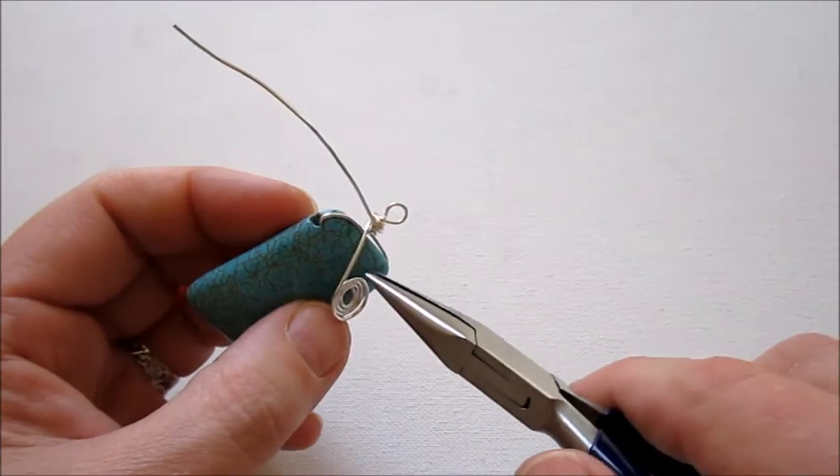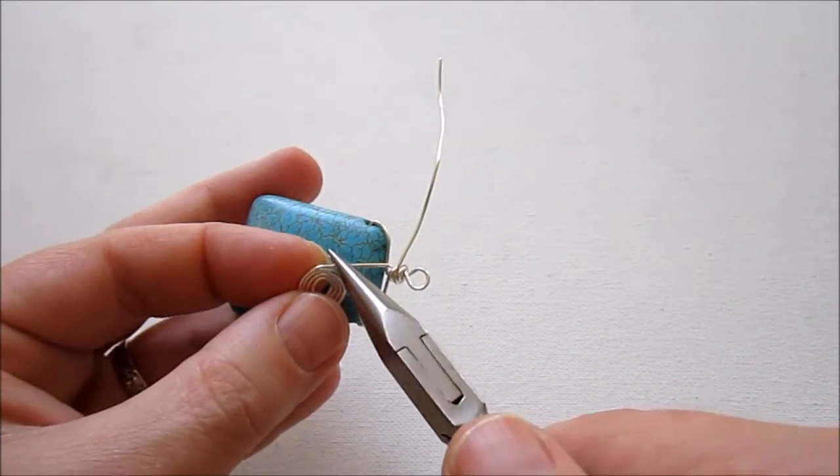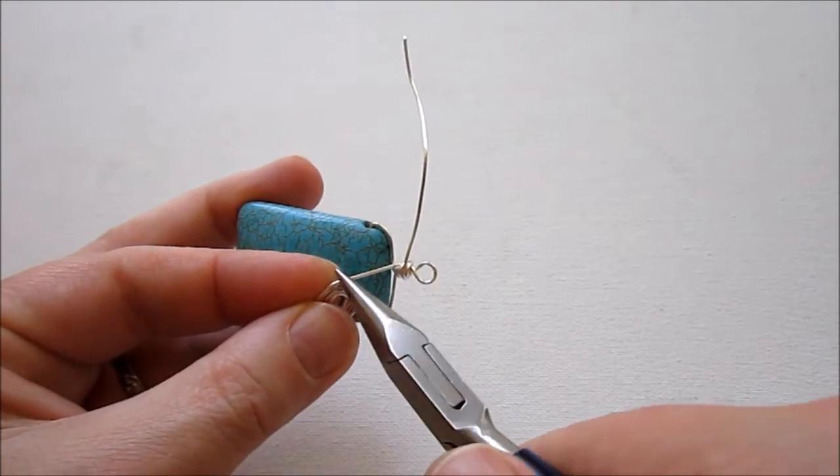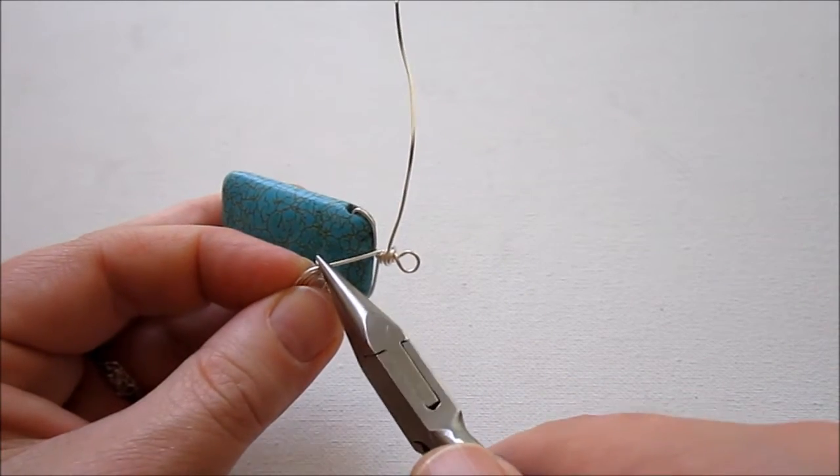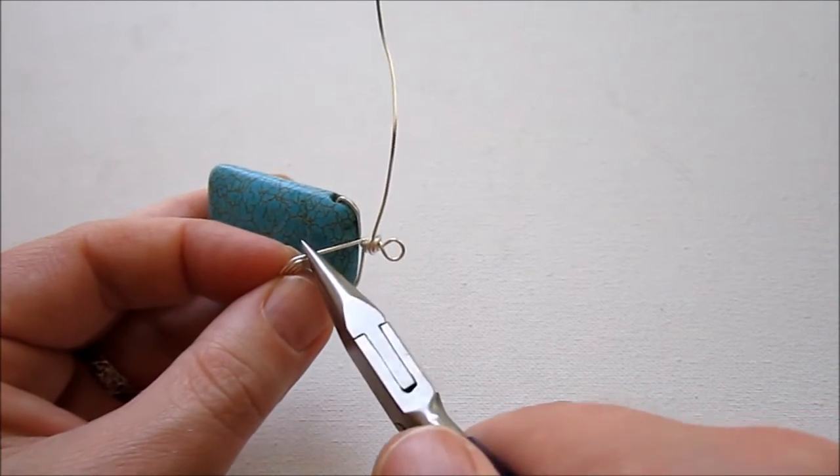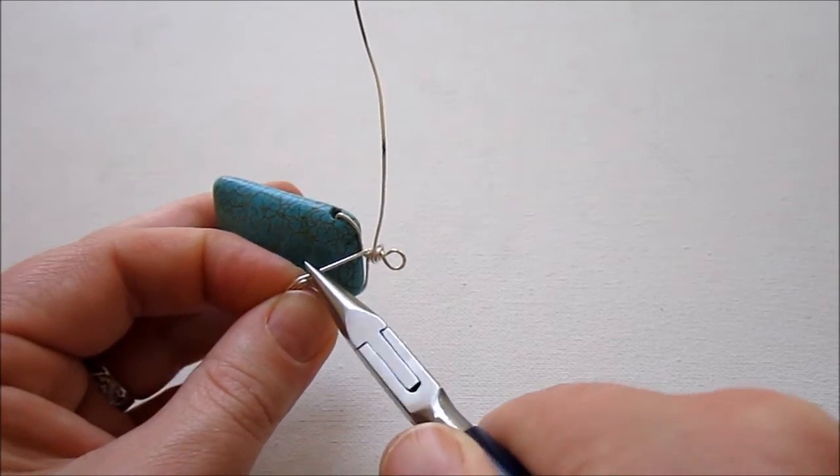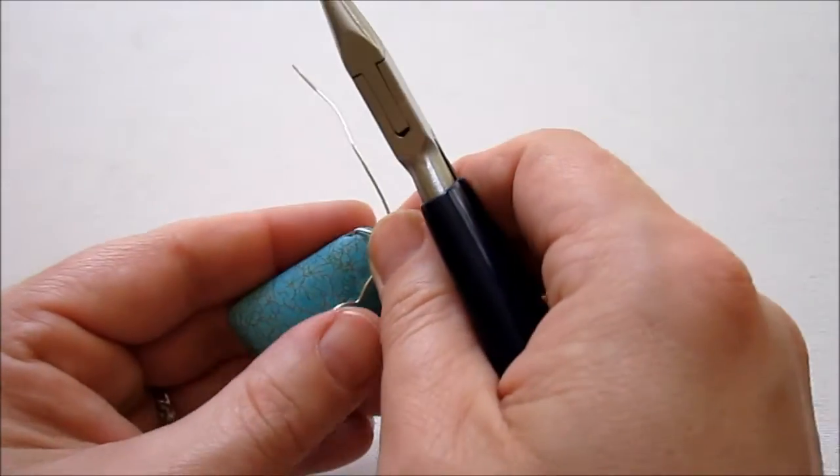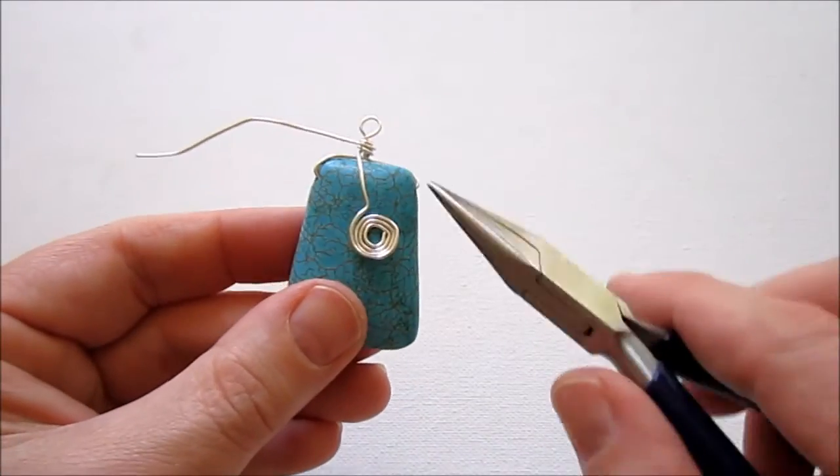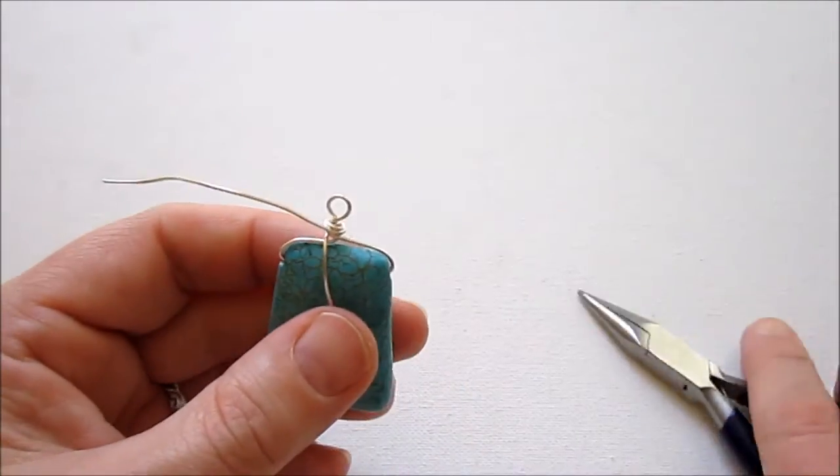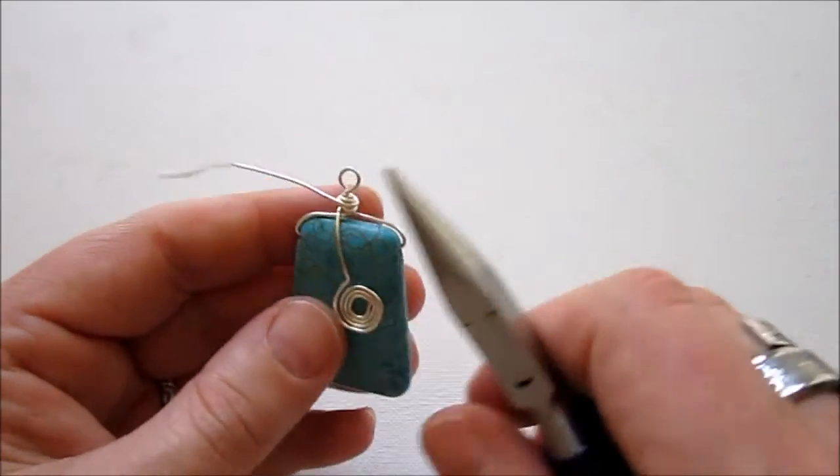So what we're going to do is take our chain nose pliers and get kind of in to the spiral, to that last part there. Kind of shove in our chain nose pliers. And then we're going to bend back. So now the spiral comes straight down. And then you can make any adjustments you need to make.